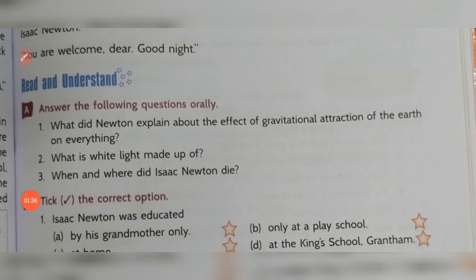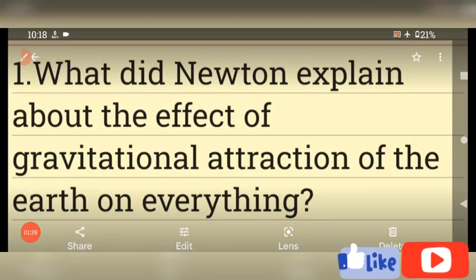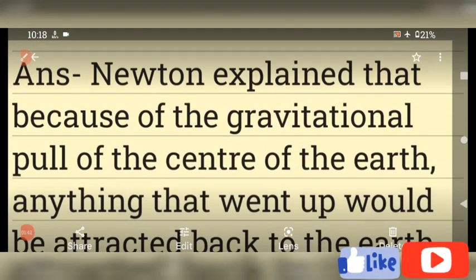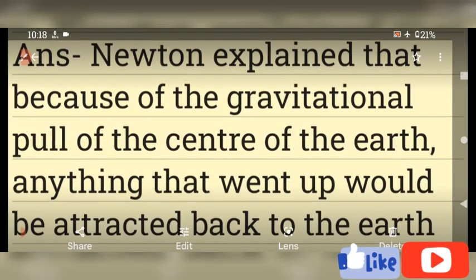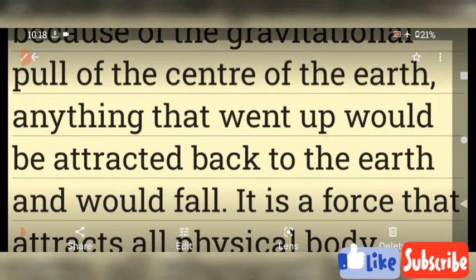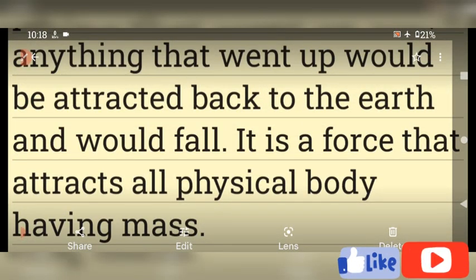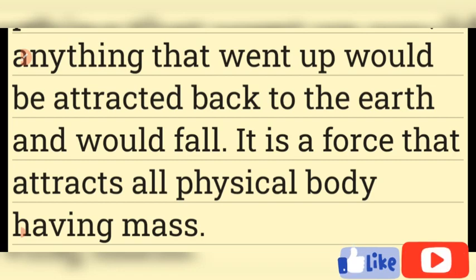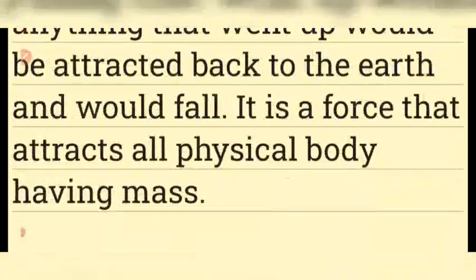Question number 1: What did Newton explain about the effects of gravitational attraction of the earth on everything? Newton explained that because of the gravitational pull of the center of the earth, anything that went up would be attracted back to the earth and would fall. It is a force that attracts all physical bodies having mass. This is the first answer — pause the video and write it in your notebook.